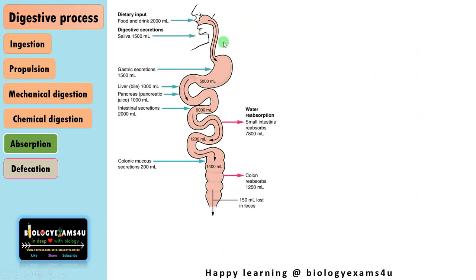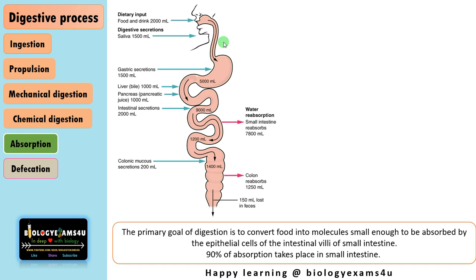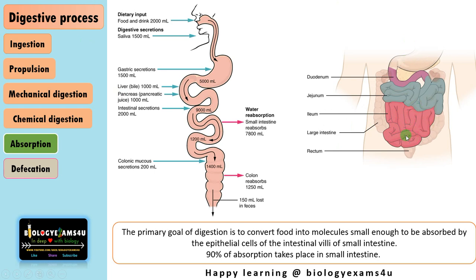The next process is absorption. The primary goal of digestion is absorption of nutrients — converting complex biomolecules like carbohydrates and proteins into simpler absorbable molecules that can be absorbed by the epithelial cells of the intestinal villi of the small intestine. Close to 10 liters of food along with drink and secretions is processed in the alimentary canal, and only about one liter reaches the large intestine — so the absorption capacity is close to 90 percent.